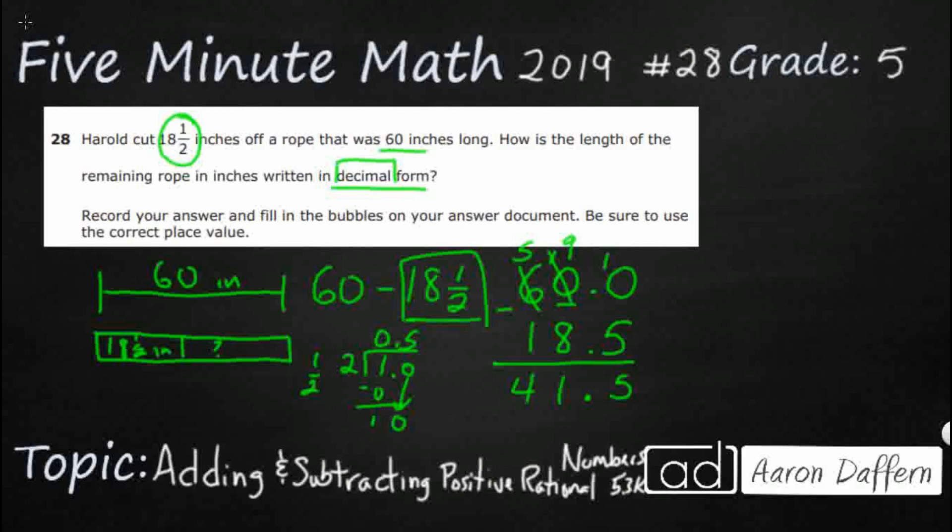Now that was what I consider the easy way. What's the harder way? The harder way is to keep everything as fractions or mixed numbers. So I've already got my 18 and a half. I need to change my 60. So what I'm going to do is I'm going to take my 60. I'm going to take one away from my 60.